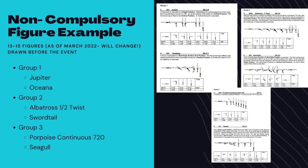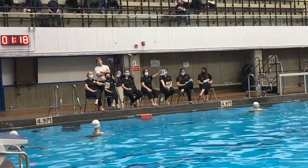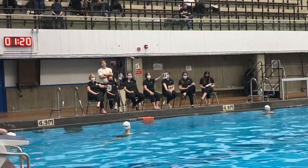The other two figures that athletes compete are non-compulsory figures. Which group is being competed will be drawn before the event takes place. As you can see in the current 13-to-15 figures, there are three groups of optional figures. Group 1 consists of Jupiter and Oceana; Group 2 is Albatross, Half-Twist, and Swordtail; and Group 3 is Porpoise Continuous, 720, and Seagull. Groups are drawn — not individual figures — so it will always be the same two figures drawn together. Having different groups allows athletes to develop different skills instead of working on the same four figures all season, and figures are age-appropriate for each athlete's skill level and stage of development.